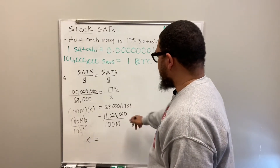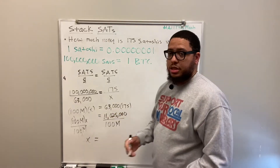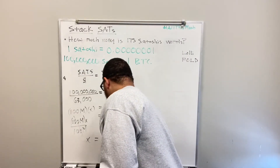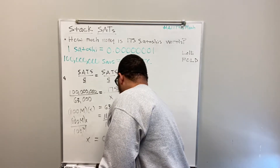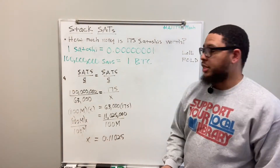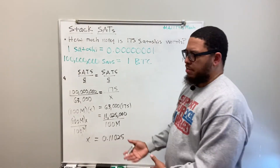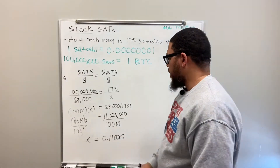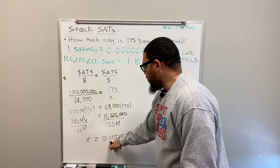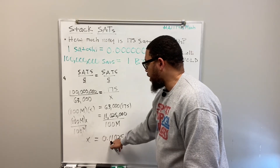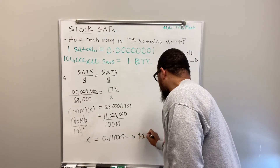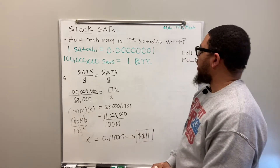That gives us our answer. Plugging 11,025,000 divided by 100,000,000 into a calculator gives 0.11025. Since we're dealing with a dollar amount, we round to the hundredths place — that's 11 cents. So the answer is 11 cents.